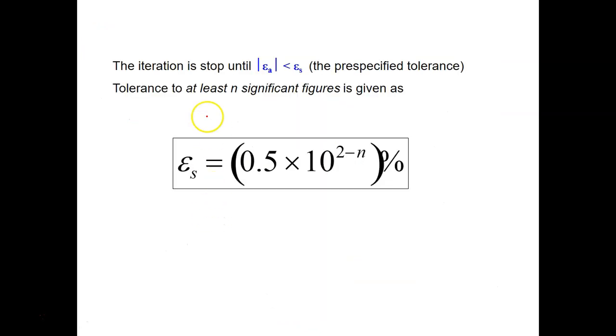So the iteration, as you move along your first calculation, your second, your third, your fourth, and so on and so on, how do you know when to stop calculating? It is when your EA, you found it less than the ES.